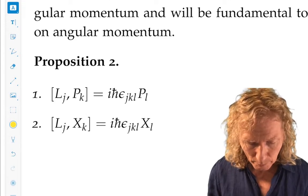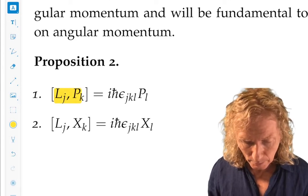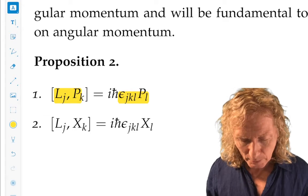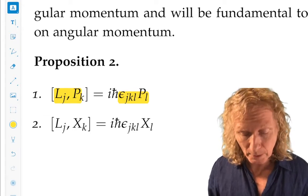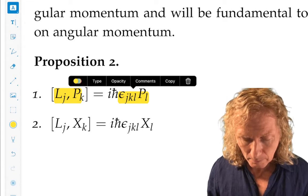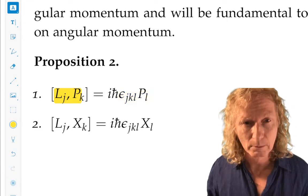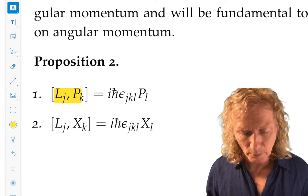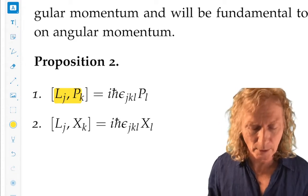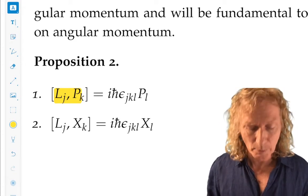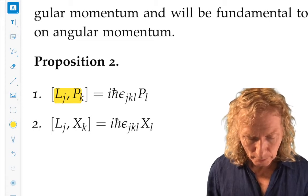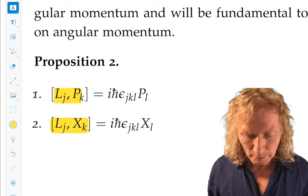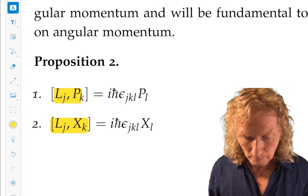The commutator of L_j with P_k. The first two indices of the Levi-Civita symbol are jk, similar to the indices on the left. And the last repeated index is what we're summing over. And ih-bar just goes along for the ride, because it's going to come out of commutation relations for x and p. The commutator of L_j with X_k is ih-bar epsilon_jkl X_l.